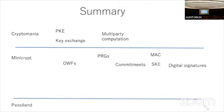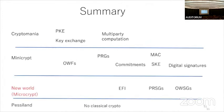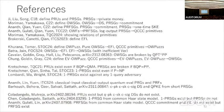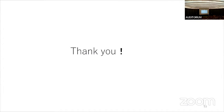In summary, in the quantum case we have a new world — Microcrypt — with new quantum primitives that are weaker than one-way functions but still have many applications. Thank you very much for your attention.